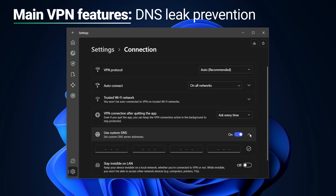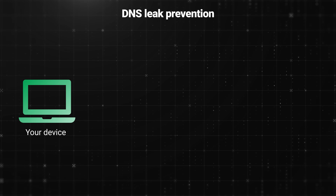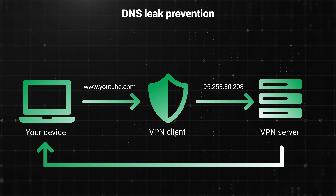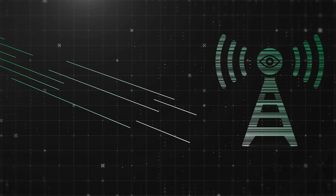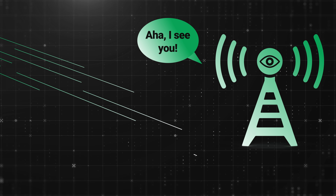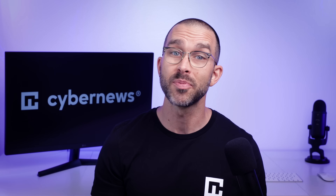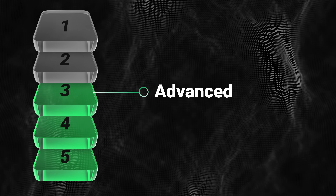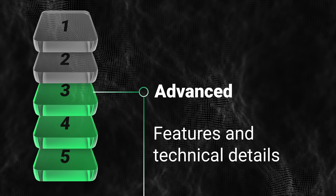Speaking of leaks, you also need to know about DNS. It's what translates your regular domain names like youtube.com into an IP address, kind of like a phone book for the internet. When you visit a website, a DNS query is sent to a DNS server to retrieve a website's IP address. But if this process gets sent outside the VPN tunnel, your ISP can then see what website you're visiting, even if the contents are encrypted. Most of the best VPNs have DNS leak protection by default, but make sure to check this before committing to a VPN provider.